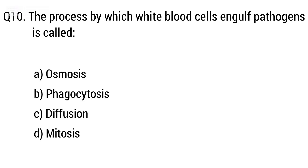Question 10. The process by which white blood cells engulf pathogens is called? The right answer is option B: Phagocytosis.